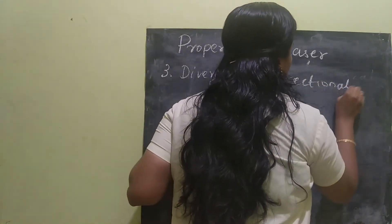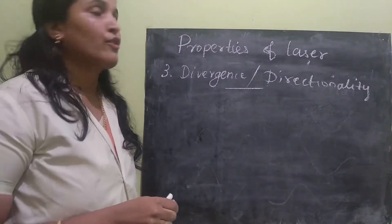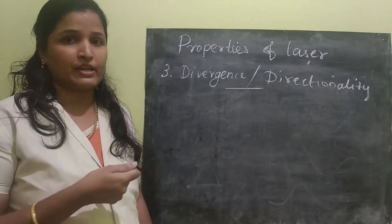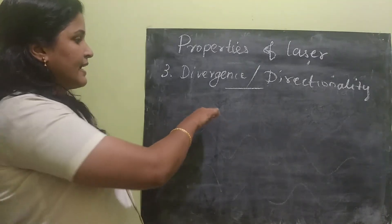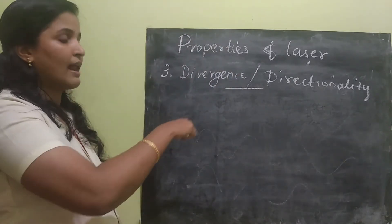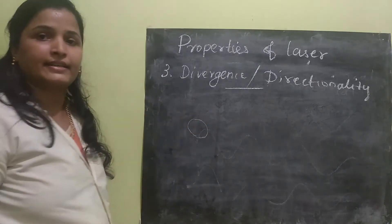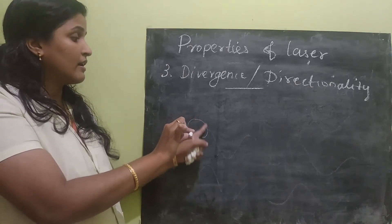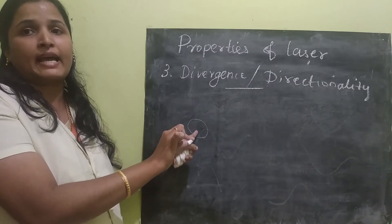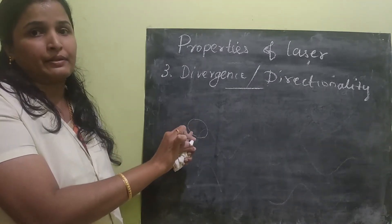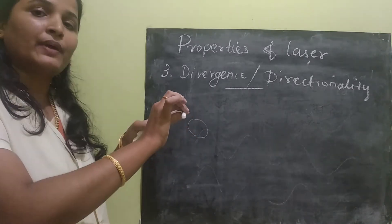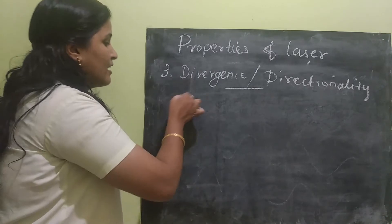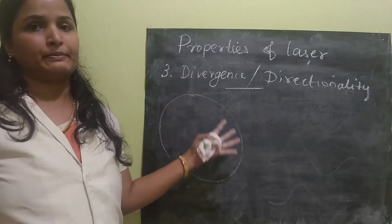The third property is divergence or directionality. To explain this, imagine we have a torchlight — switch it on facing a wall. We will have a round light on the wall, and this circular structure is called the beam diameter. In laser we have the same term, beam diameter. As we increase the distance between the torch and the wall, the beam of light will be bigger.